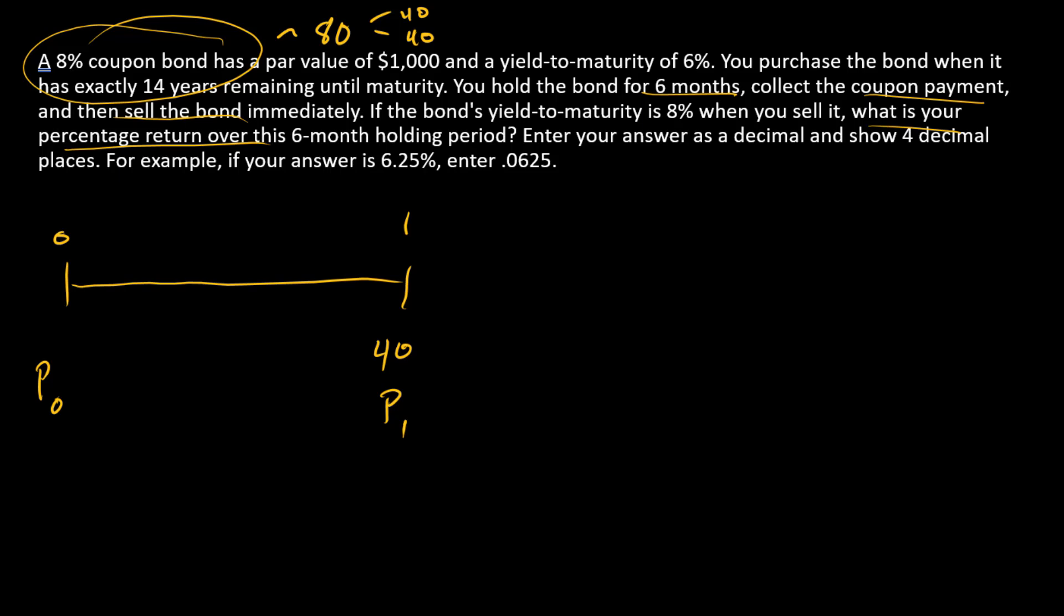All that we need to calculate then are first this price and this one. So let's do those one at a time. Let's start with P0. When the investor first buys this bond, this bond has 14 years remaining till maturity, so there's 28 payments on the initial timeline. These payments are $40 each and there's a par repayment of $1,000 at the end. Now initially, the yield to maturity is 6%.